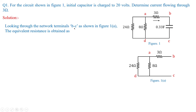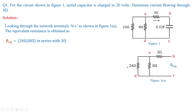Looking through the network terminals BC — that is, through the charged capacitor — the equivalent resistance is calculated because we need to compute the time constant tau equals RC. Remove the charged capacitor and through those terminals find R equivalent. Here 24 ohms is in parallel with 8 ohms, and that combination is in series with 3 ohms. The parallel combination gives 24 times 8 divided by 24 plus 8, plus 3 ohms in series, giving R equivalent equal to 9 ohms.